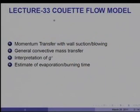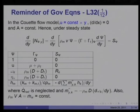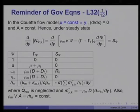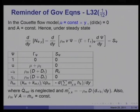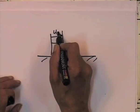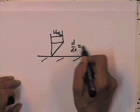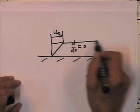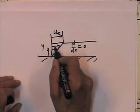Let us begin with momentum transfer with wall suction and blowing. In the Couette flow model, the velocity u is taken to be constant multiplied by y, all axial derivatives are set to zero, and therefore the steady-state transport equation reads: d/dy of n·psi·y equals d/dy of (rho·m·v·psi minus (gamma plus gamma_t)) times d·psi/dy, equal to S_psi. The Couette flow model assumes a velocity profile with u_infinity constant along the plate, with mass transfer taking place in the y-direction.